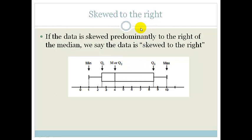If the data is skewed predominantly to the right of the median, we say the data is skewed to the right. In other words, if this bit is much bigger than that little bit, if Q3 is further away from Q2 or the median than Q1 is, then we say the data is skewed to the right.